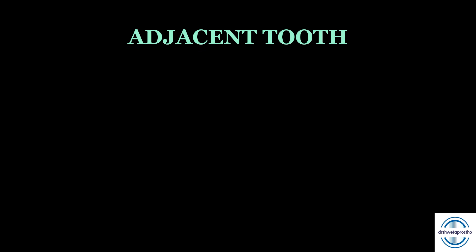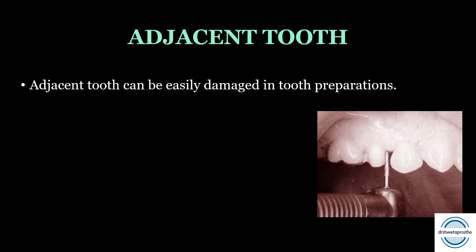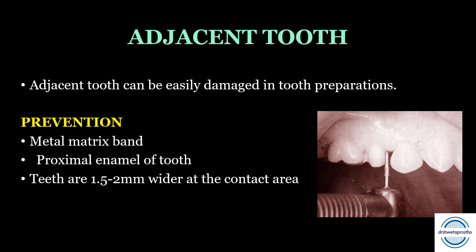First, if we talk about the adjacent tooth — the adjacent tooth can be easily damaged during tooth preparation. To prevent damage to the adjacent tooth, first we can use a metal matrix band, which will help so that the bur will not touch the adjacent tooth. Second, we can make use of the proximal enamel of the tooth. We all know that teeth are 1.5 to 2 mm wider at the contact area. This is how we can prevent damage to the adjacent tooth.